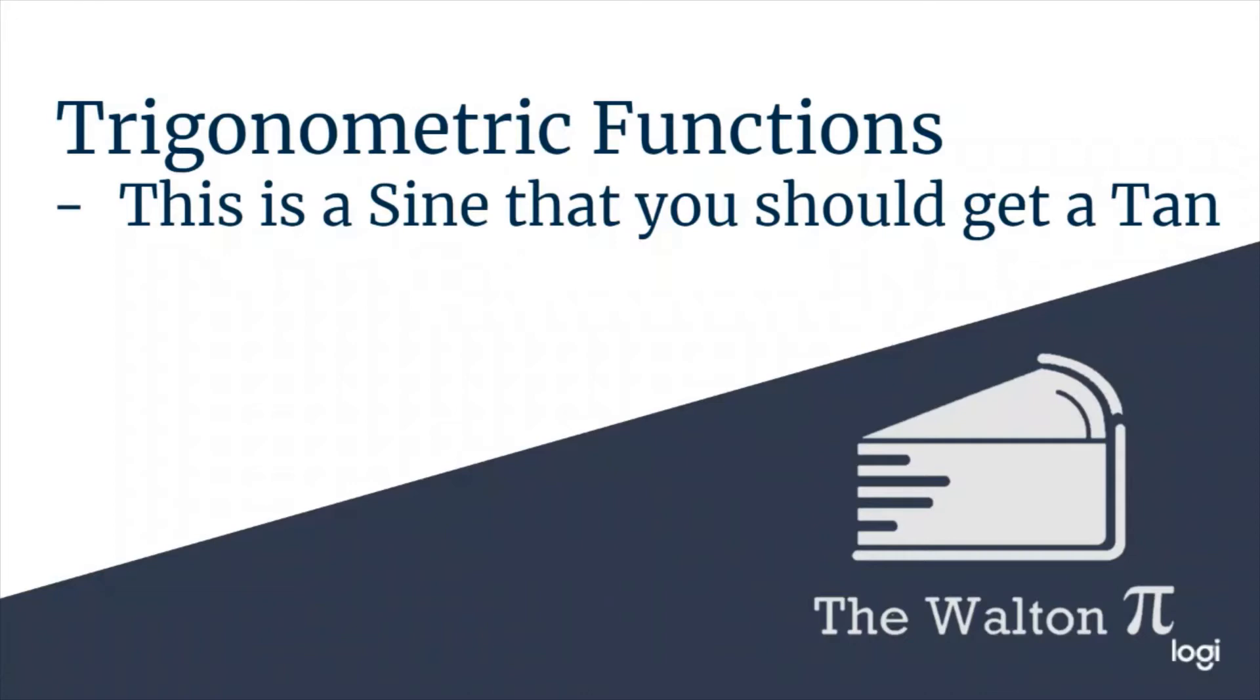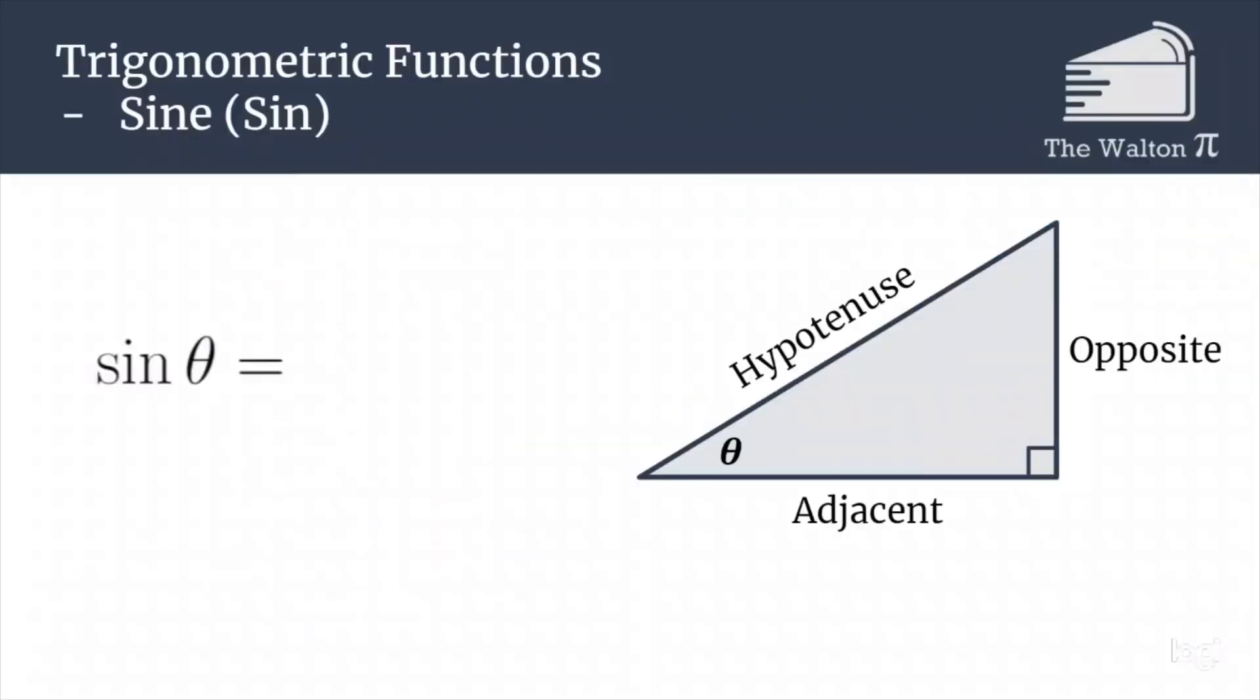The first trig function we are going to be talking about is sine. All of these trig functions can be thought of in terms of a triangle, where theta is the angle as signified in this right triangle. Each of the sides are going to have a different name: opposite (the side opposite of the angle), adjacent (the leg of the right triangle that is next to the angle), and the hypotenuse, which is as it normally is in a right triangle.